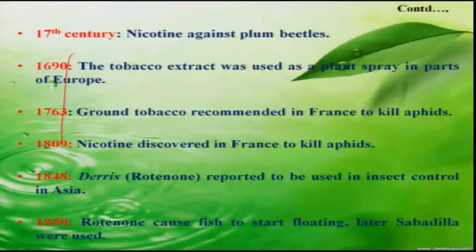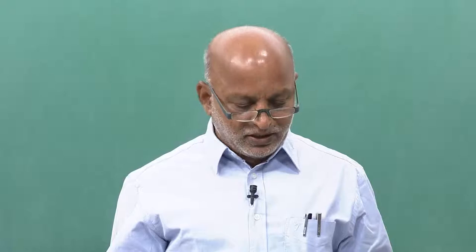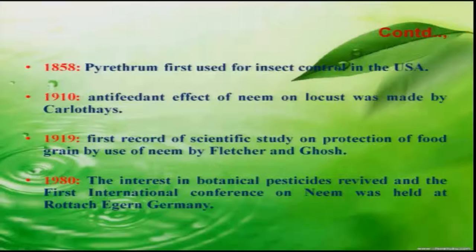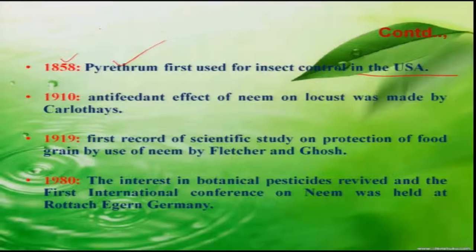Among them, tobacco and rotenone products were largely used for the management of various insect pests across countries including India. Rotenone was much used, but afterwards, because of its ill effects on fish, another product — sabatilla — was used for insect pest management. Similarly, pyrethrum was first used against insect control in the USA during 1858.